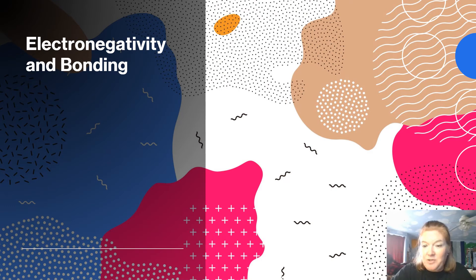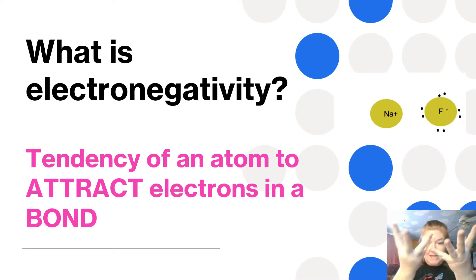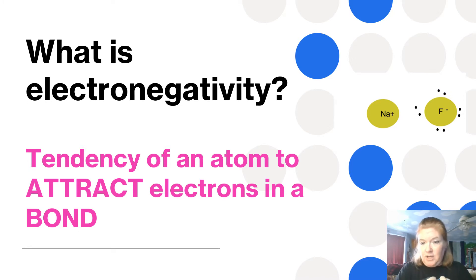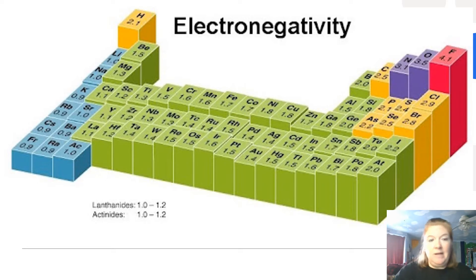Let's talk about electronegativity and bonding. What is electronegativity? It's the tendency of an atom to attract electrons in a bond. Remember, this is what electronegativity looks like — we talked about it before, with fluorine having the highest value and francium having the lowest.